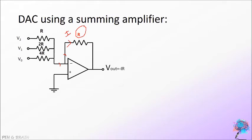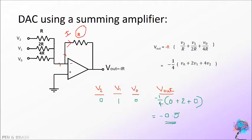V0 is equal to minus I into R or we can represent V0 is equal to minus R into V2 by R plus V1 by 2R plus V0 by 4R. Now, let us consider an input signal 0, 1, 0. So, just substitute the values of voltages in the equation and we get the answer as minus 0.5V.